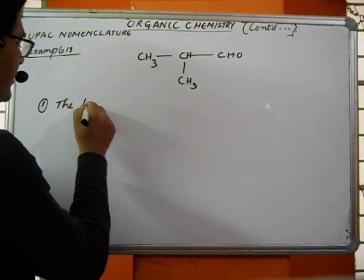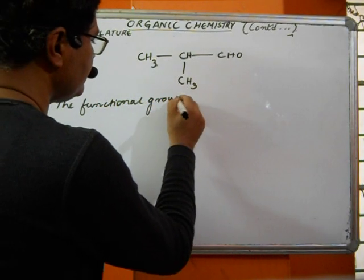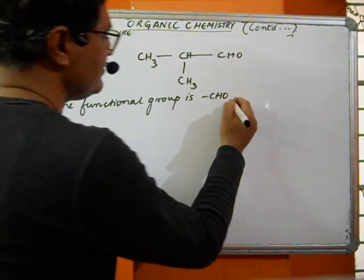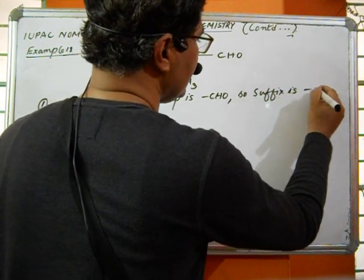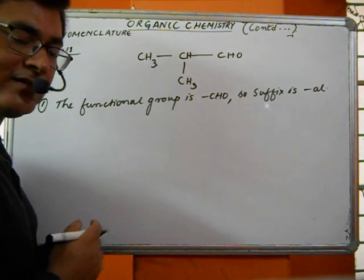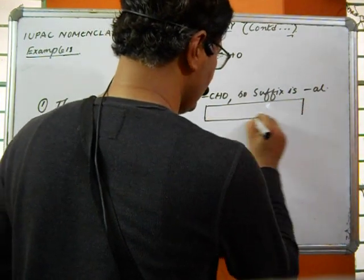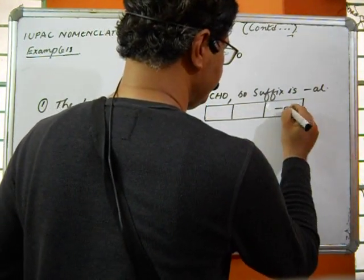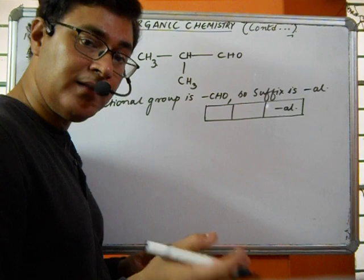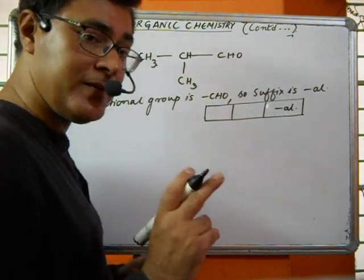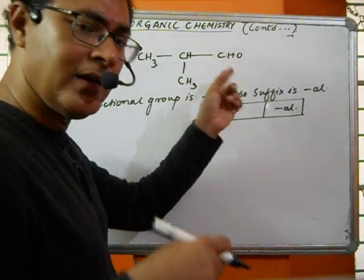The functional group is -CHO, so the suffix is -al. Whenever the functional group is present, it gets a preference. The functional group contains a carbon atom, so the numbering starts from there — the functional group carbon gets the lowest location number.